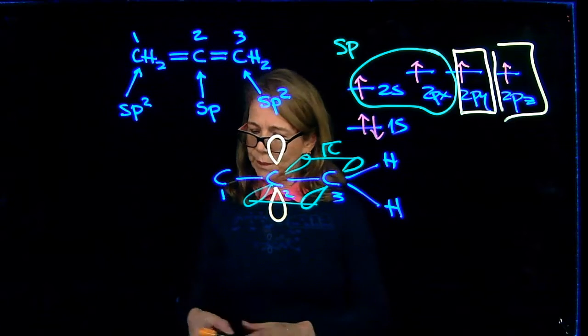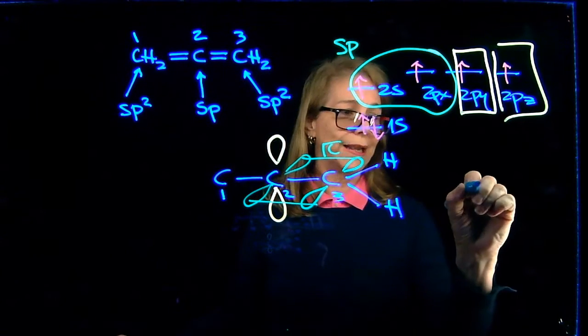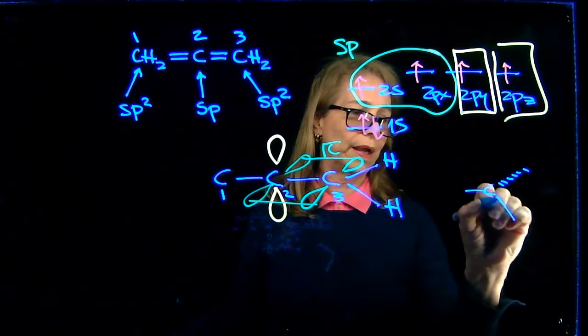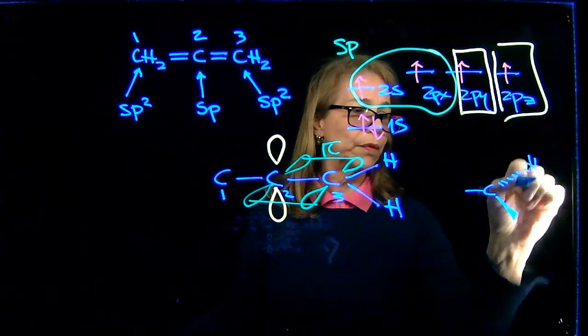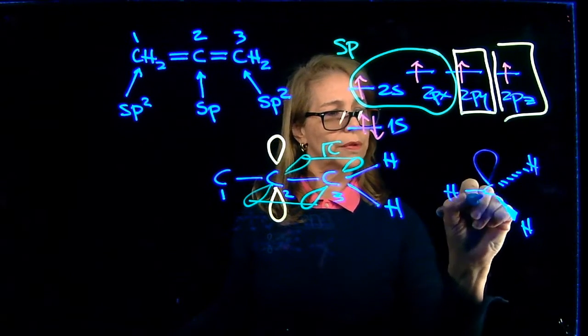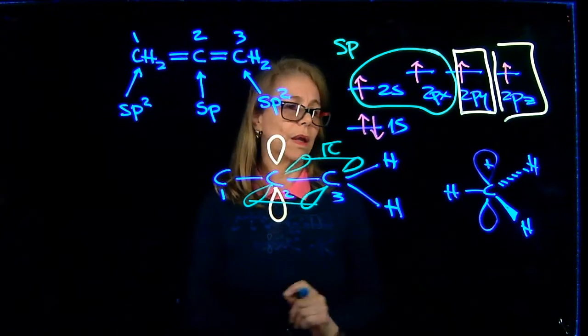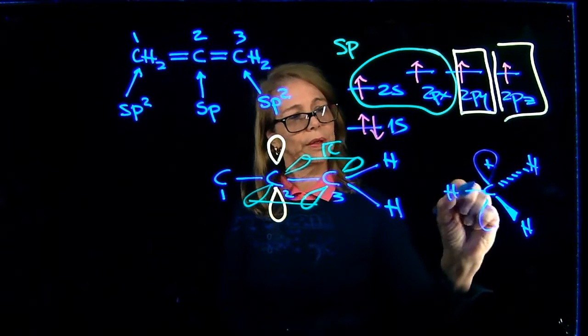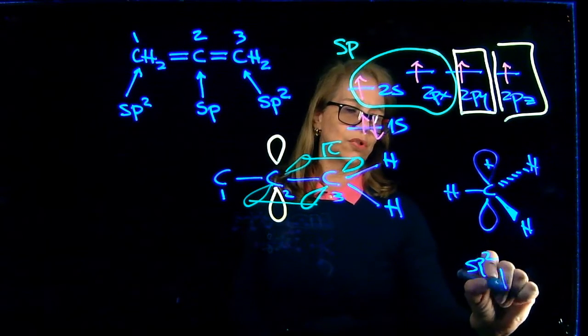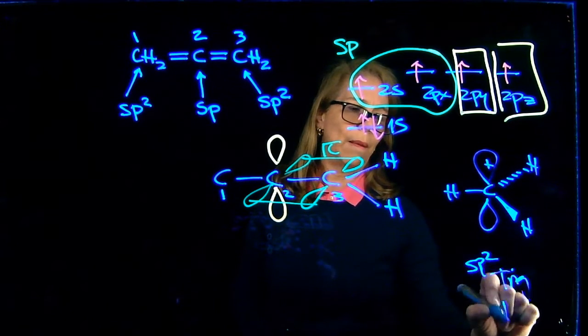So the atoms are here in the plane of the board. The pi bond is perpendicular, just as we have in any SP2 hybridized. Say, for example, if I had three bonds, and here I'm using this hybridization model in a carbon cation. But the point is that this is SP2 hybridized. The geometry is trigonal planar.